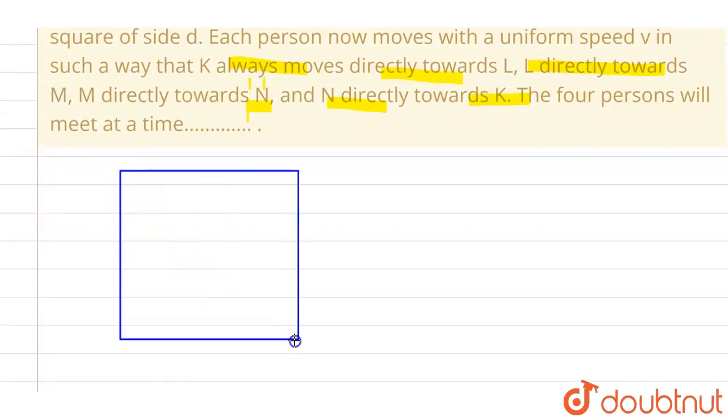So let's say this is the square, and at four corners there are K, L, M and N.